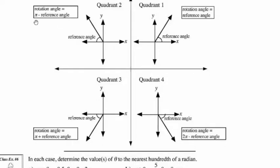Remember when we were talking about degrees, we said 180 degrees minus the reference angle, but since we're working with radians, we say pi minus the reference angle. In quadrant 3, the rotation angle is going to be pi plus the reference angle. And if we know it's going to be in quadrant 4, then the rotation angle is going to be 2 pi minus the reference angle.